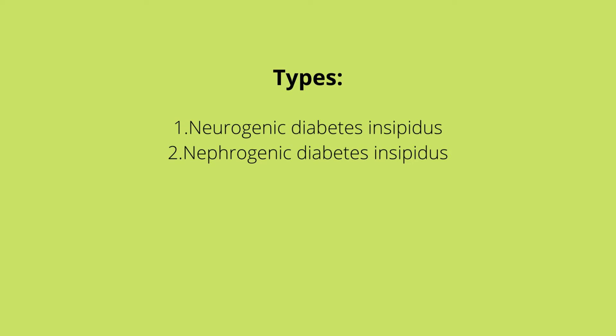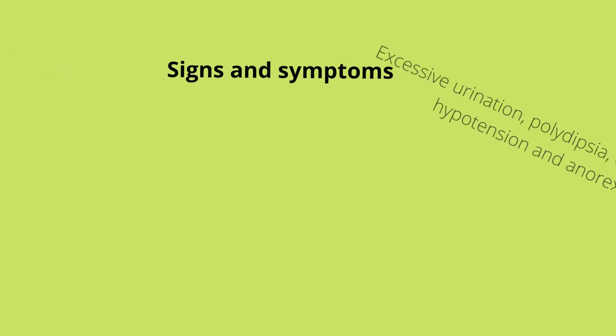With nephrogenic diabetes insipidus, the posterior pituitary gland is doing its job fine — it's releasing ADH — but there is something wrong with the kidneys and they are not responding appropriately to the ADH being released. This may be due to kidney infection, kidney damage, or nephrotoxicity by medication.